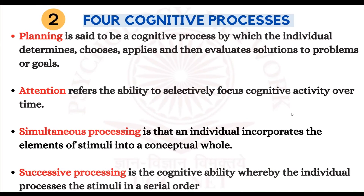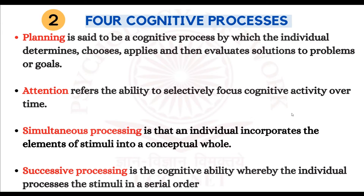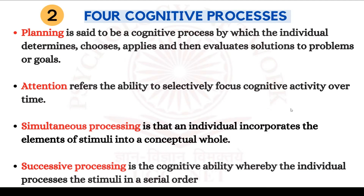The four cognitive processes this theory discusses are planning, attention, simultaneous processing, and successive processing. Planning is the cognitive process by which a person determines, chooses, applies, and then evaluates solutions to problems or goals they want to reach. Suppose a person has goals and needs a plan — to stick to that plan, they need the ability of attention, which means selectively focusing on those tasks that lead to the solution or goal.